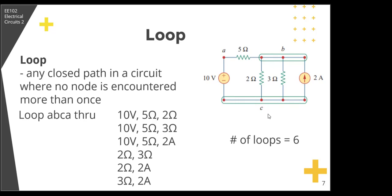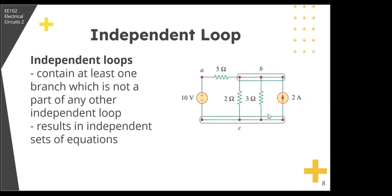What's more important about loops is what we call independent loops. A loop is said to be independent if it contains at least one branch which is not a part of any other independent loop. Why is this important? Because independent loops or paths result in independent sets of equations.